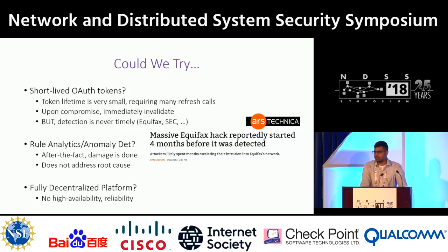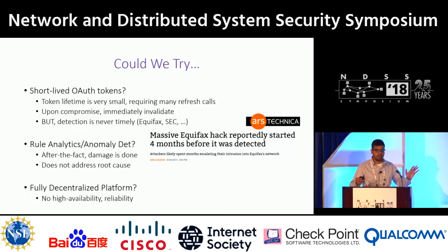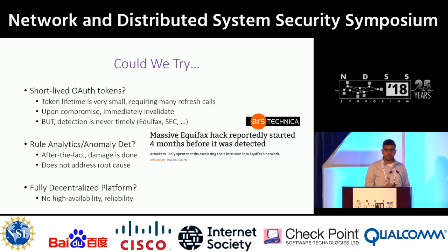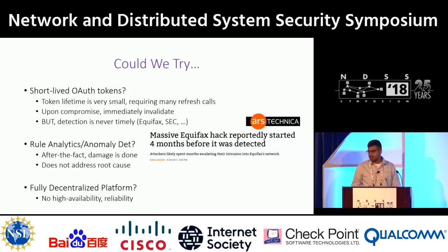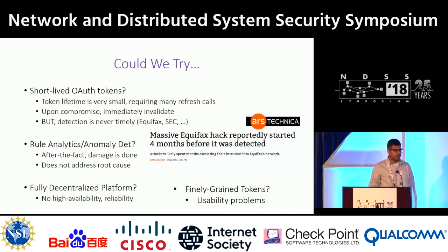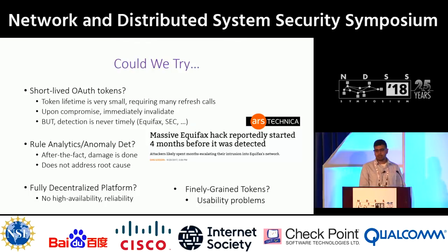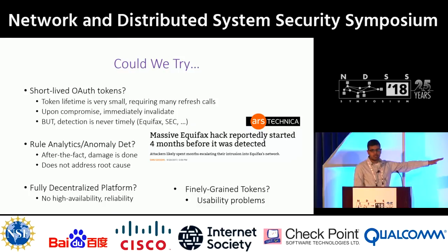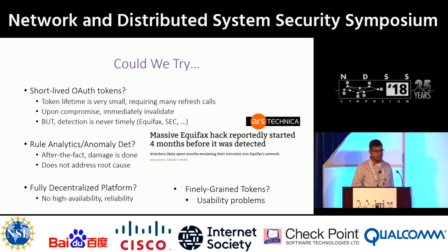We could try a fully decentralized architecture where every user runs their own trigger action platform, removing the single valuable target — but then you don't gain the benefits of a centralized cloud service like high availability and reliability. Finally, you could try fine-grained tokens, which limits privilege, but introduces usability issues. Our solution takes inspiration from decentralization and fine-grained tokens, but requires overcoming several technical challenges.